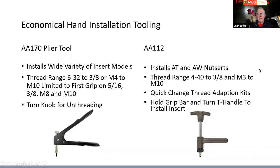The A170 plier tool is more economical — you squeeze it to set the insert, then turn the knob to unscrew from the insert after installation. It handles AL, AK, and AH inserts. For nutserts and AW inserts, the AA112 has a 90-degree T-handle and quick-change TAK capability, covering #4-40 through 3/8 inch and M3 to M10 in all materials for AT and AW series inserts.